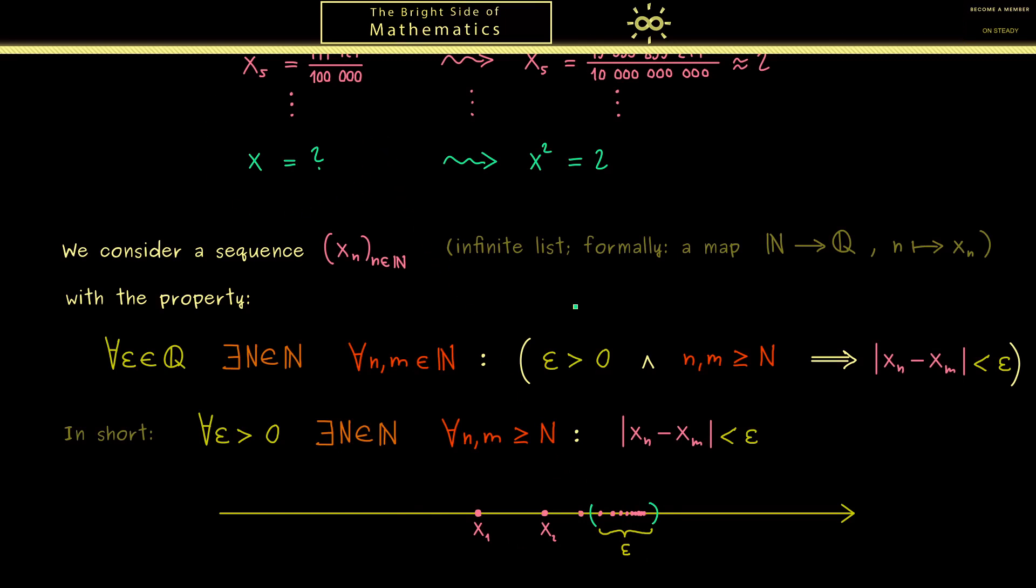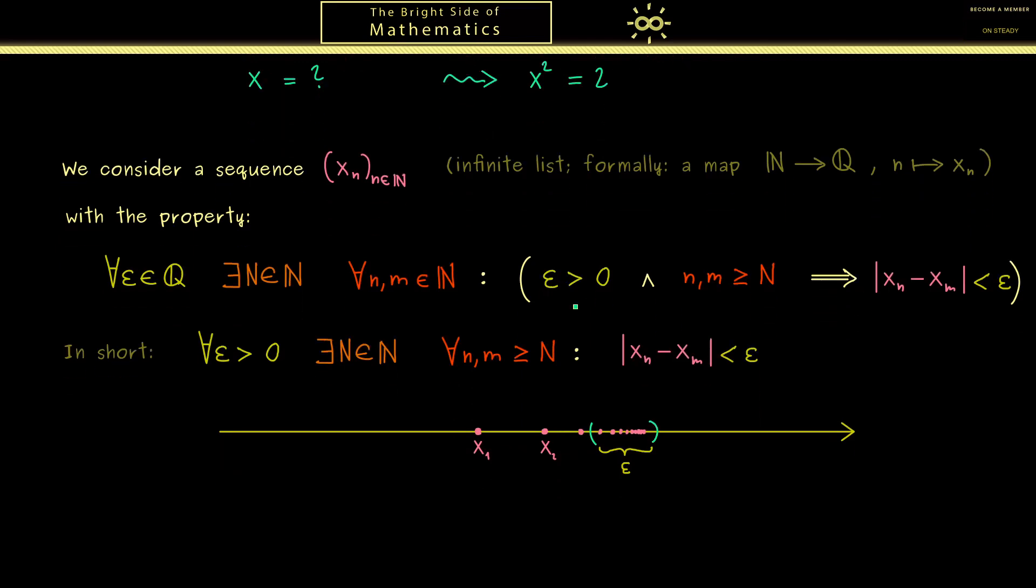Therefore, the sequences with this property will be important for getting the real numbers. For this reason they get a special name: we call them Cauchy sequences. So a Cauchy sequence is just a sequence of rational numbers that satisfies this property here.